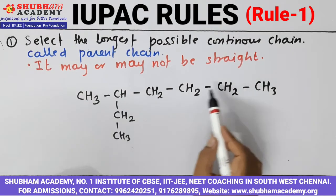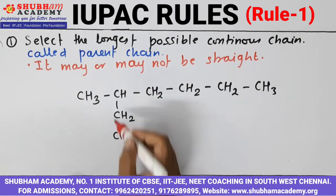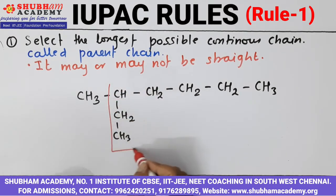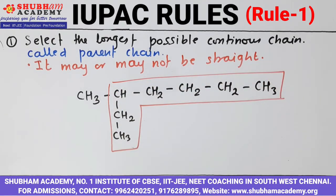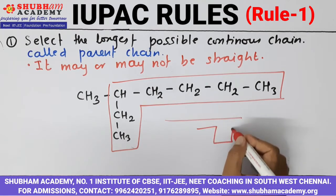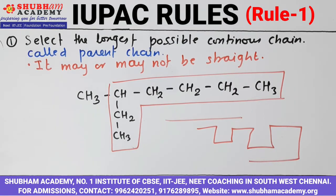But if you are coming down, counting gives 1, 2, 3, 4, 5, 6, 7 — so here you have 7 carbon atoms. So you will take this as the longest chain. As I said, the longest chain may or may not be straight — it can be zigzag also — but it should be continuous. So in this case, this is my longest chain.